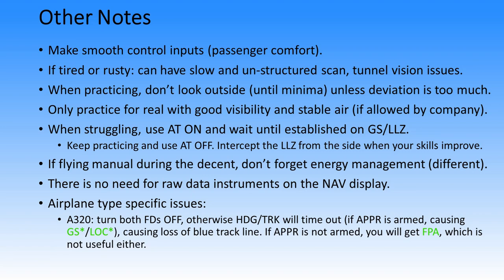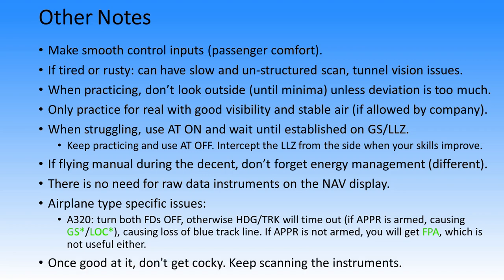Take into account airplane-specific issues. For the A320 Raw Data ILS, you need to turn both flight directors off. You might think to leave the flight director on for the pilot monitoring, but if you do, the heading and track will time out. If the approach is armed, it will cause glide slope star and localizer star on the pilot monitoring side, causing loss of the blue track line. If the approach is not armed, you'll get FD/A on the FMA, which is not useful either. So turn both flight directors off for the A320 — and probably for all Airbus aircraft. Once you get good at flying a Raw Data ILS, don't get cocky and think you don't need to scan as much — that's how it goes wrong. You still need to scan the instruments a lot and pay a lot of attention.